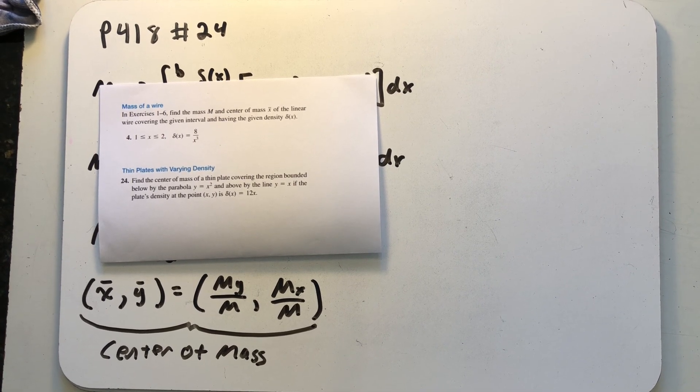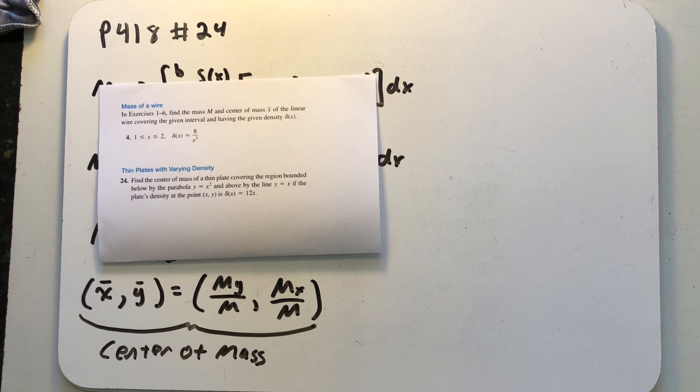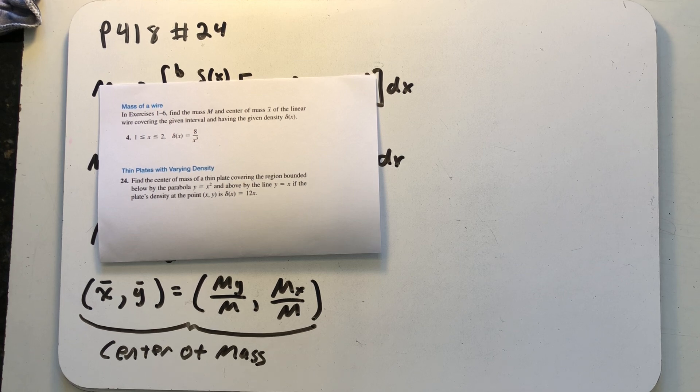Find the center of mass of a thin plate covering the region bounded below by the parabola y equals x squared and above by the line y equals x. If the plate's density at the point xy is delta of x equals 12x.